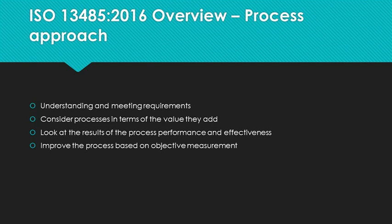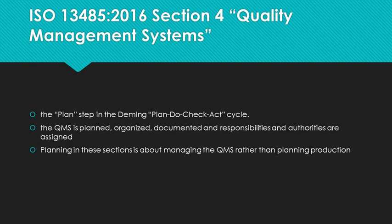Now we've finished the overview — let's get into the standard itself. Section 4, Quality Management System, and section 5, Management Responsibility, are the big picture sections. This is where the QMS is planned, organized, documented, and responsibilities and authorities are assigned. Planning in these sections is about managing the QMS rather than planning production; planning production is discussed in section 7. Sections 4 and 5 are the plan step in the Deming Plan, Do, Check, Act cycle. This video will cover section 4; the next video, part 2, will cover section 5.